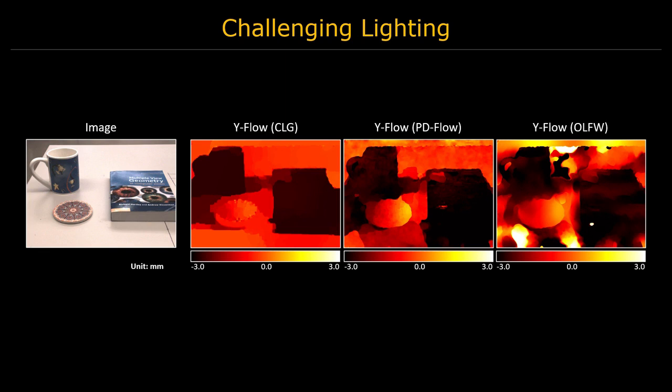Here we show a failure case of our method. This example features many shadows cast on a textureless tabletop. Because the brightness constancy assumption is violated, none of the three methods can estimate the motion boundaries exactly.